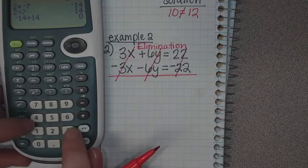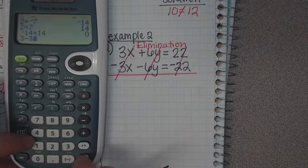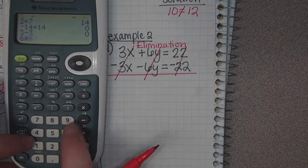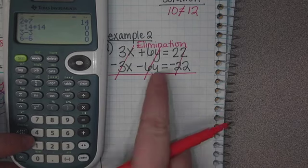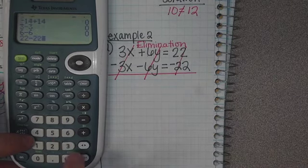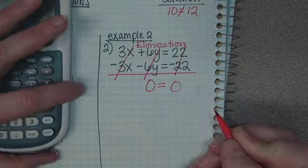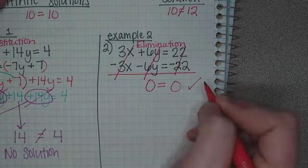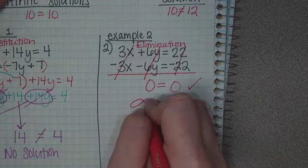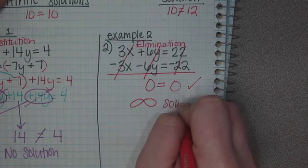Let's do that in the calculator just to make sure. 3 minus 3, canceled. 6 minus 6, canceled. 22 minus 22 is canceled. You're left with nothing. 0 equals 0, which that is true. So it would be infinite solutions.